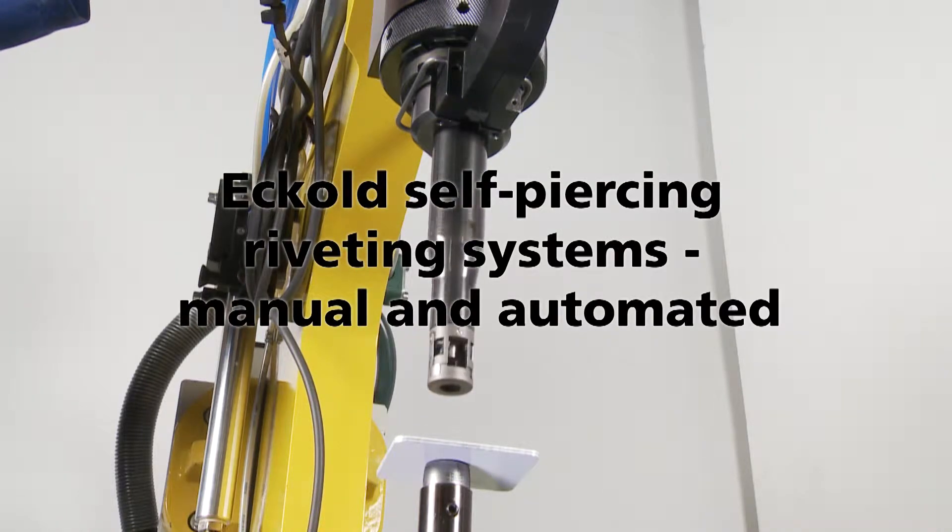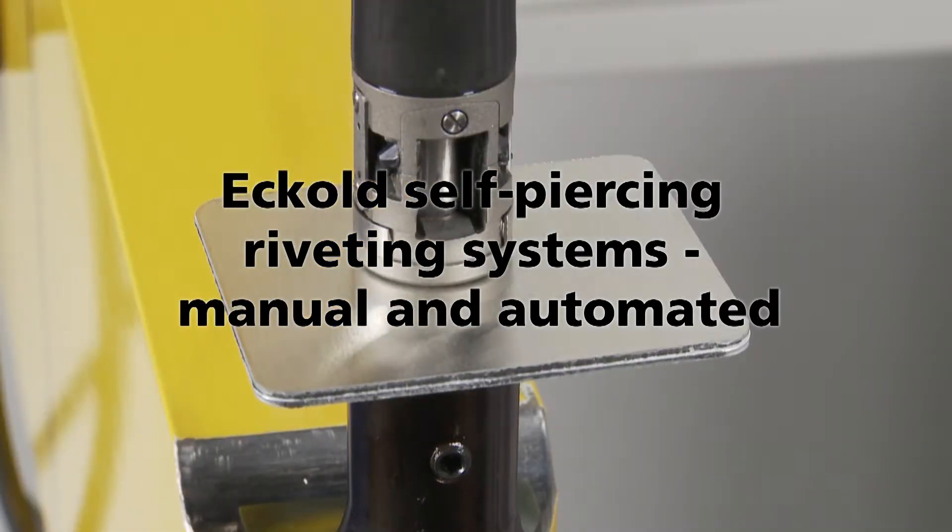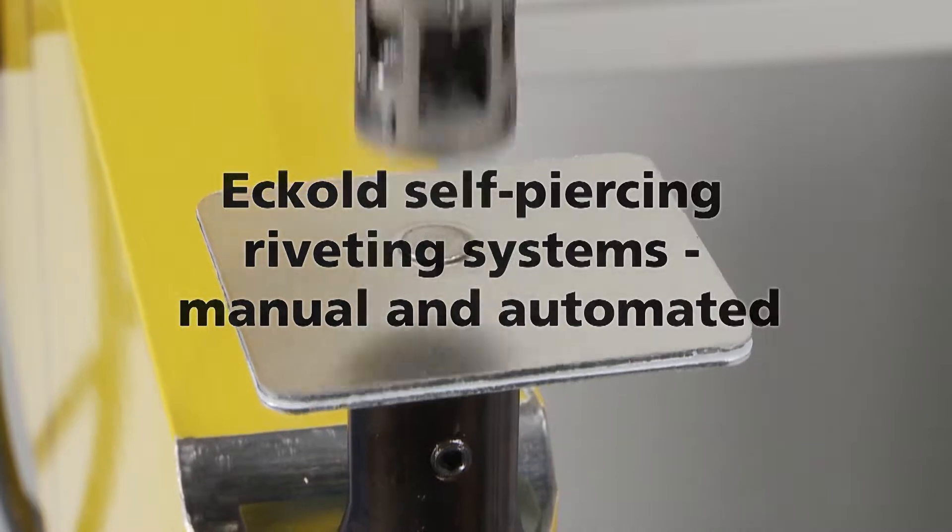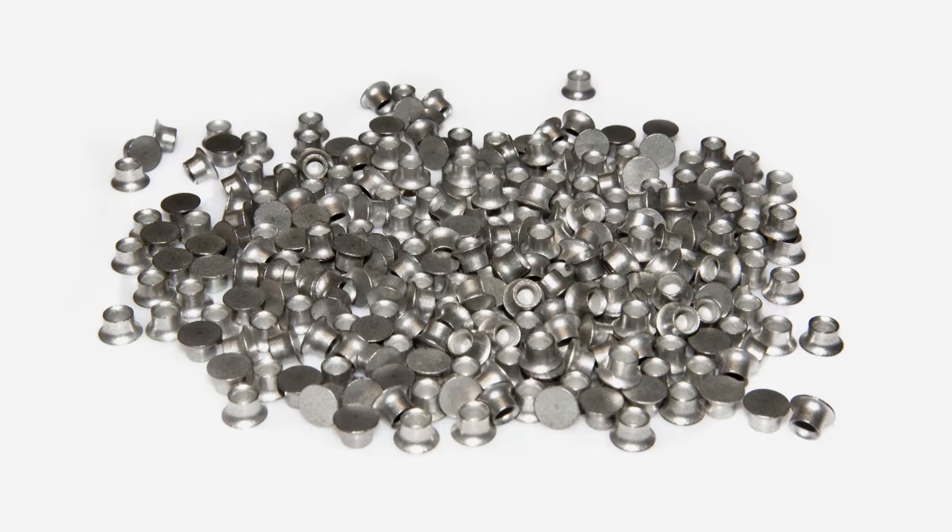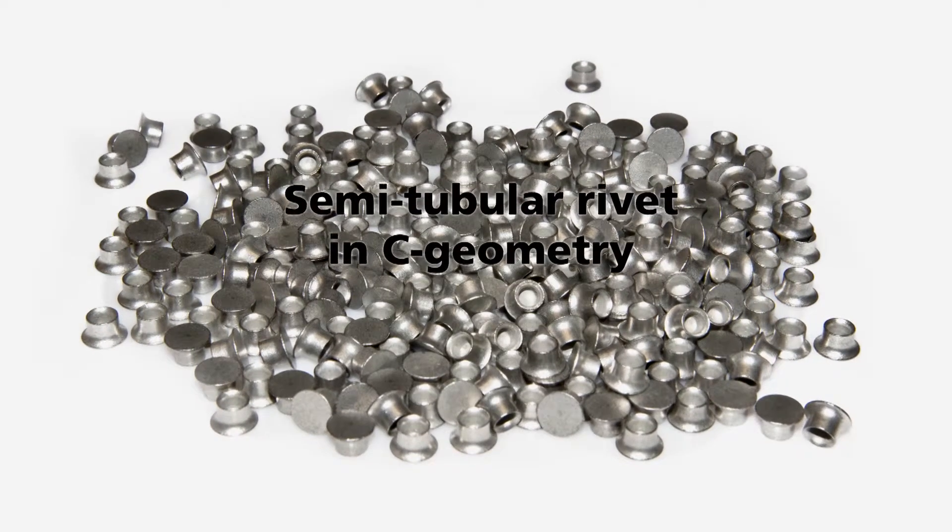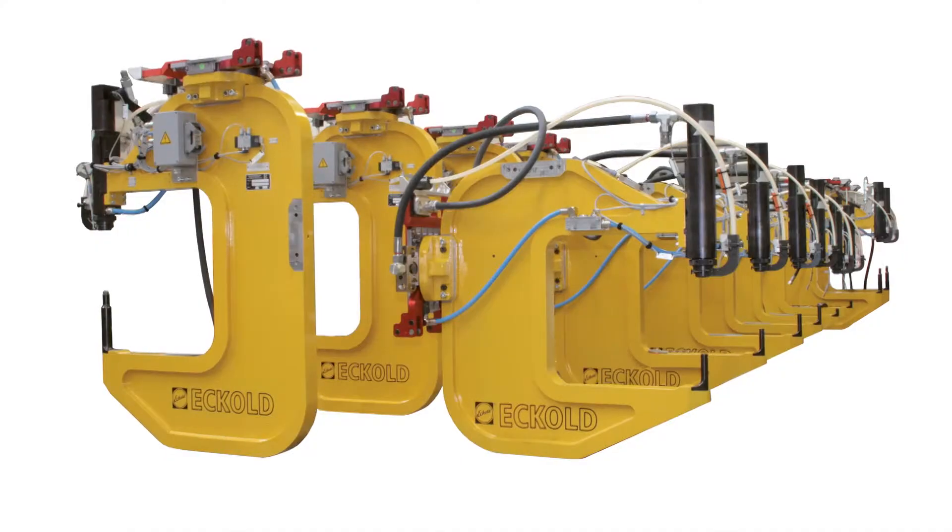Eccolt self-piercing riveting systems, manual and automated. The Eccolt self-piercing riveting systems allow for the sea geometry insertion of semi-tubular rivets.